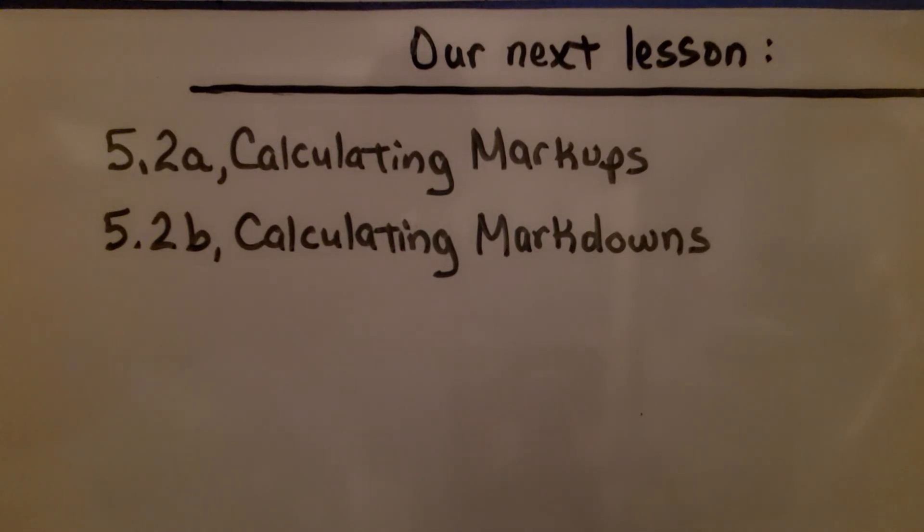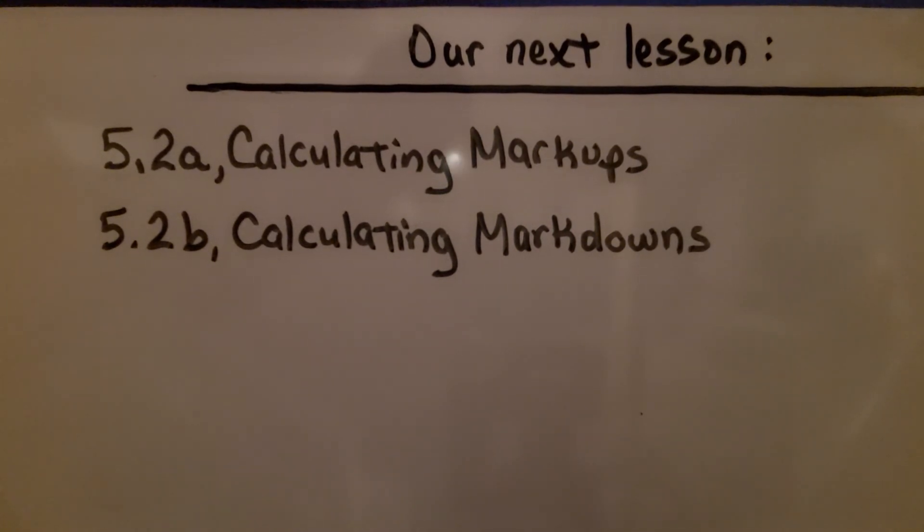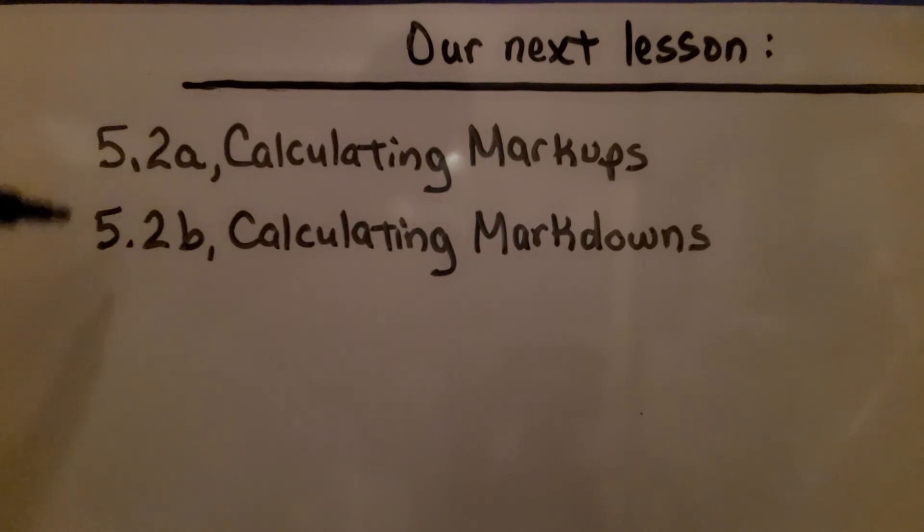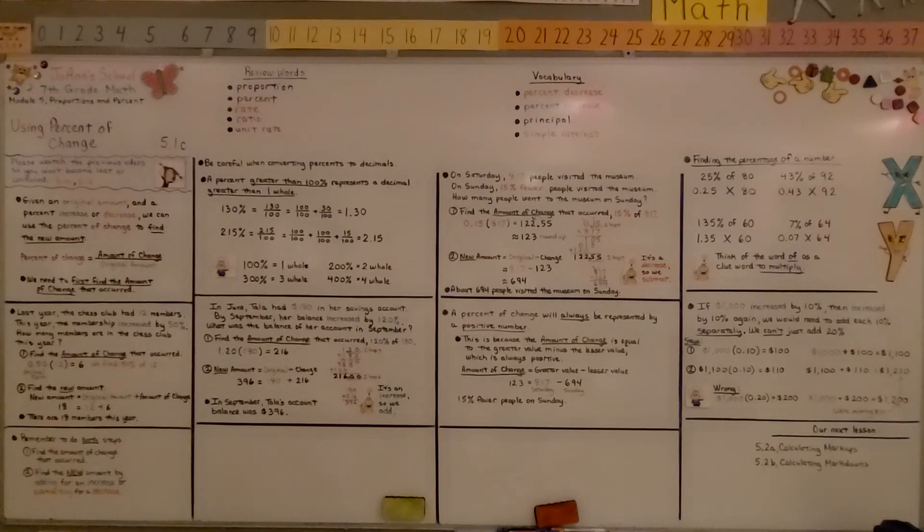We're finished with lesson 5.1. We're moving on to 5.2, which is only in two parts. We're going to be calculating markups, then calculating markdowns. Knowing how to find a markup or markdown is very helpful when you go shopping and you want to buy a shirt and it says it's 25% off. You can figure out what the price is after the 25%. I hope you enjoy the rest of your day, and I hope you join me for the next lesson. Bye!